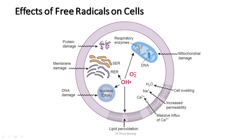In nuclear and mitochondrial DNA, free radicals or ROS can cause strand breaks and other types of damage. Radical damage to DNA in germline cells — in ovaries and testes — can lead to heritable mutations, and in somatic cells the result may be initiation of cancer or tumor.